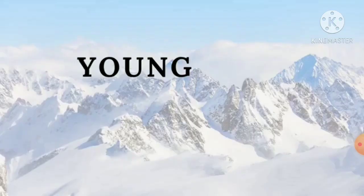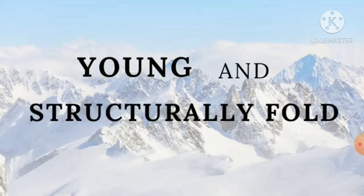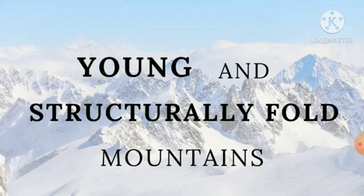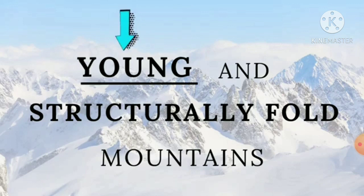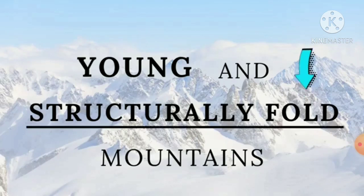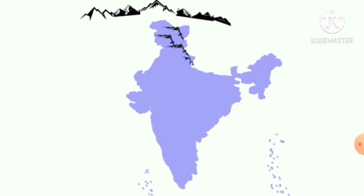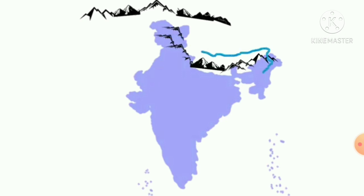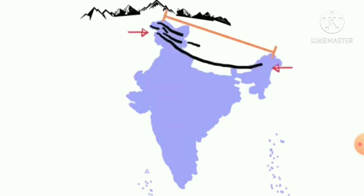The Himalayan Mountains are young fold mountains of the world. These mountain ranges run from east to west forming a great chain. This chain of mountains is about 2,400 kilometers in length.